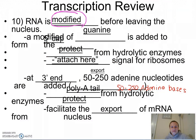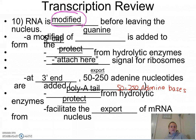To summarize: RNA is modified before leaving the nucleus. We get a guanine cap and a poly-A tail. The guanine cap is at the five-prime end — it protects RNA from hydrolytic enzymes and signals to ribosomes where to attach. At the three-prime end, we have our poly-A tail, which is 50 to 250 repeated adenine nucleotides. This tail also protects the RNA from hydrolytic enzymes, signals ribosomes to attach, and facilitates export of the messenger RNA from the nucleus.